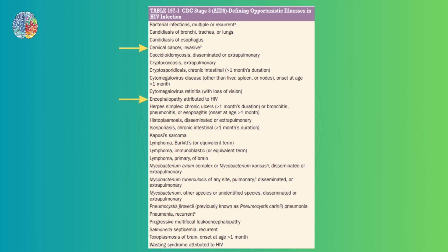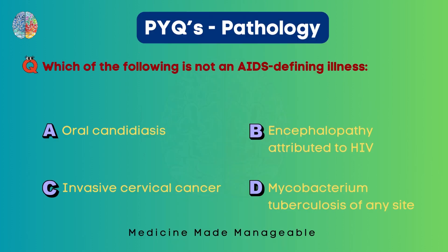Encephalopathy attributed to HIV is also listed, as is mycobacterium tuberculosis of any site. However, if you pay attention to the top of the table, you'll see candidiasis of the bronchi, trachea, lungs, and esophagus — but the question option was oral candidiasis, which is not listed. So the correct answer is option A.